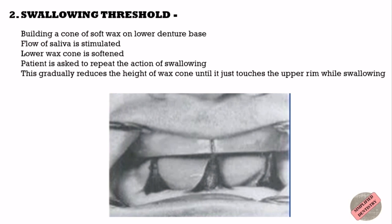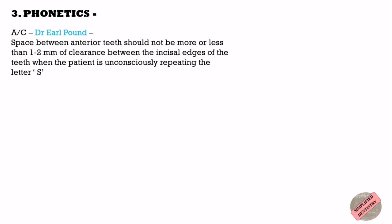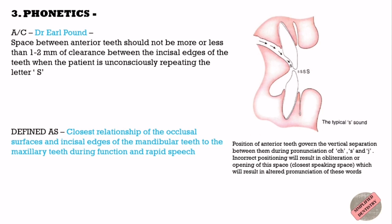However, this method has not proven to be consistent. Phonetics is also one of the physiologic methods used to determine vertical dimension. According to Dr. Earl Pound, the space between the anterior teeth should not be more or less than 1 to 2 mm of clearance between the incisal edges when the patient is unconsciously repeating the letter S — for example, rapidly counting from 60 to 66. Dr. Silverman termed this as 'speaking centric,' defined as the closest relationship of the occlusal surfaces and incisal edges of the mandibular teeth to the maxillary teeth during function and rapid speech.